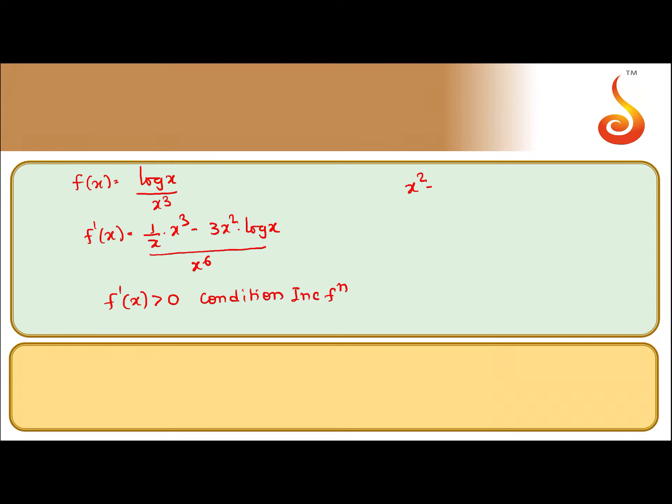So what we do from this we get x square minus 3x square log x is greater than 0. x square common, 1 minus 3 log x is greater than 0.